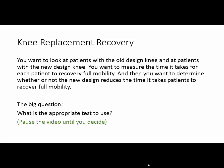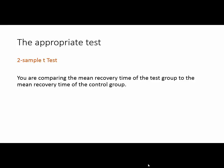Now that we've answered those three questions, we're ready to answer the big question: what is the appropriate test to use? The appropriate test is a two-sample t-test. We are comparing means — that's a t-test — and we have two independent samples. This is a two-sample t-test to compare the mean recovery time of the test group to the mean recovery time of the control group.